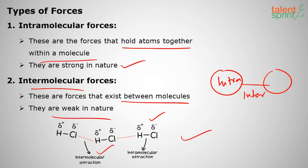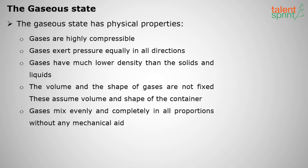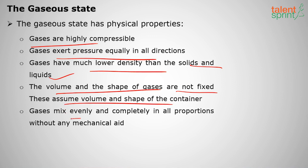Next, what is gaseous state? Gaseous state has some physical properties we shall see. Gases are highly compressible compared to liquids and solids. Gases exert pressure equally in all directions and have very much lower density than solids and liquids. That's why they are easily compressible. The volume and shape of gas are not fixed - they assume the volume and shape of the container. Gases mix evenly and completely in all proportions without any mechanical aid because they have very less density.